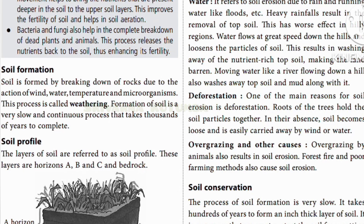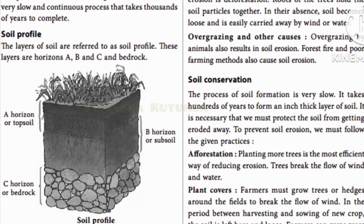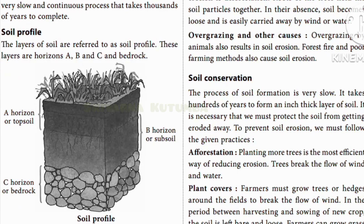Soil formation occurs due to the breaking down of rocks by water, wind, and microorganisms like moss that grow on them. This process is called weathering. The formation of soil is a very slow and continuous process that takes thousands and thousands of years to complete.